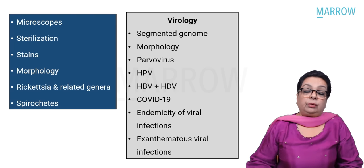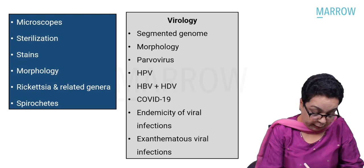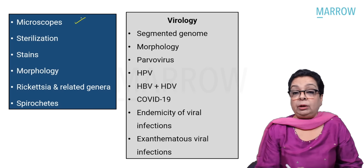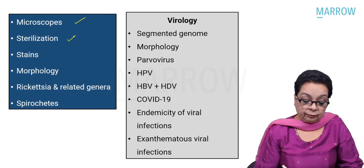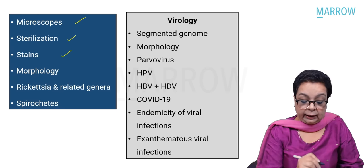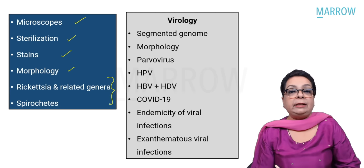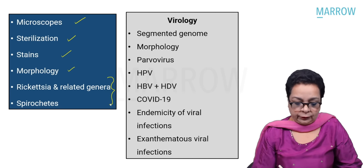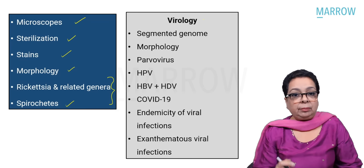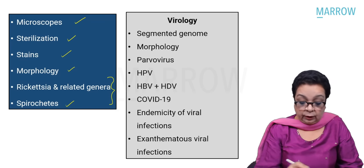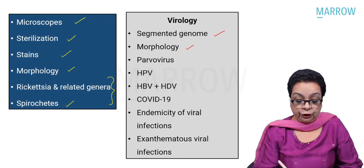I've divided the topics section-wise. From general microbiology and general bacteriology we had questions on microscopes, sterilization and disinfection, and staining and morphology of bacteria. From systemic bacteriology we had questions from rickettsia and related genera — in fact two questions were asked — and spirochetes, again a commonly asked topic. Virology had the maximum number of questions.